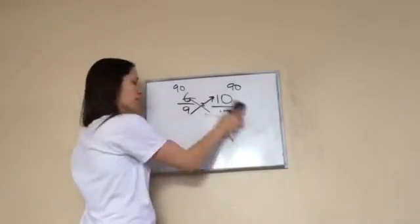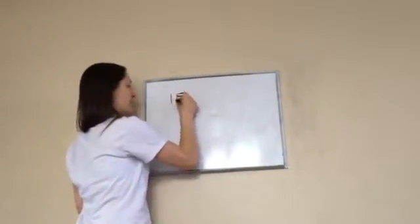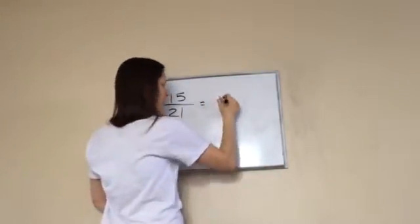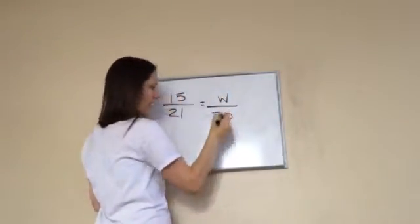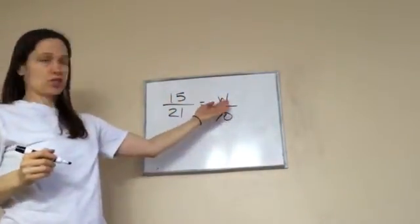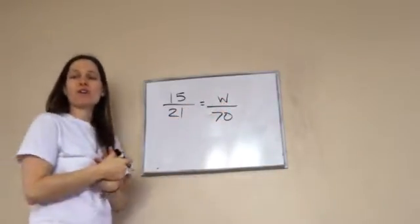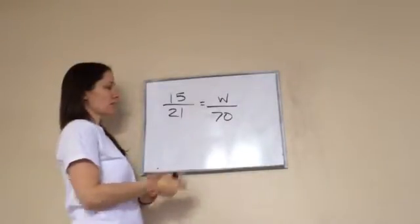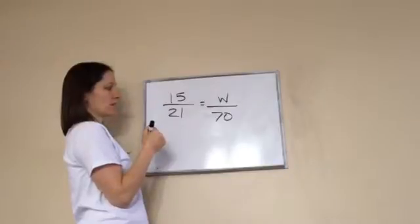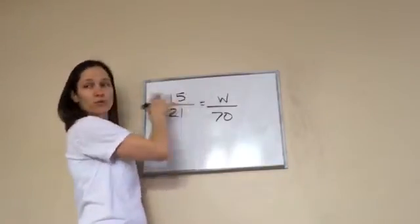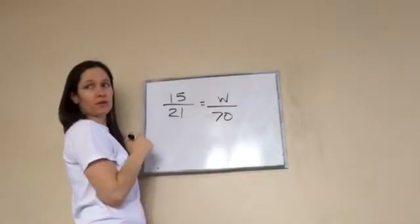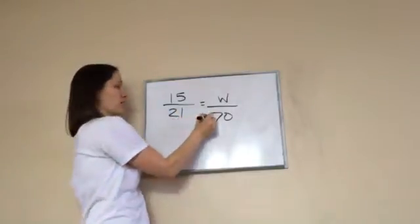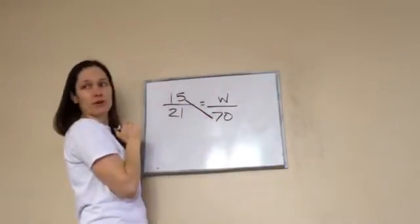All right. I want you to try one on your own, on your paper. Okay. 15 over 21 equals W over 70. Now, W can mean anything, remember? It's just I don't know the answer to it. So what's my very first step? You walk me through it, and we'll do it together. It's 15 times what equals 70? Okay. Now, wait a minute. What do I do to get the answers here? Remember? I cross? Yeah. Okay, so let's go in and multiply this and see what our answer is up here. Let's do that.